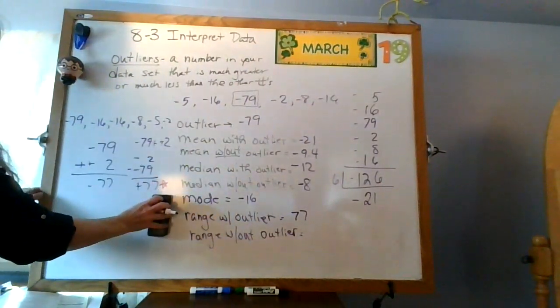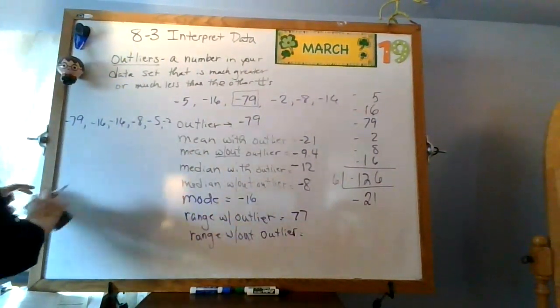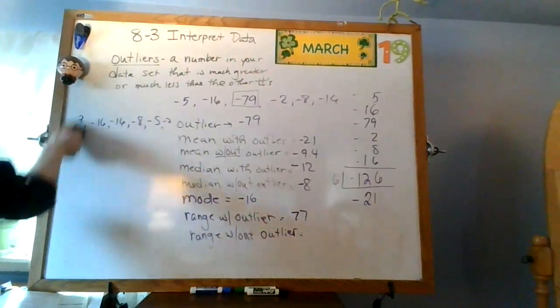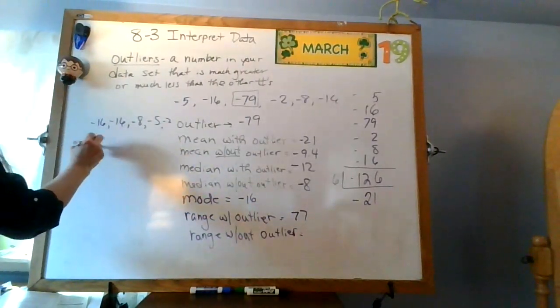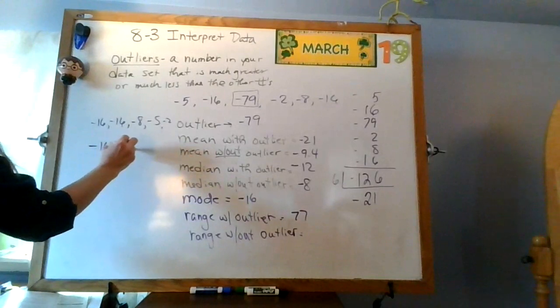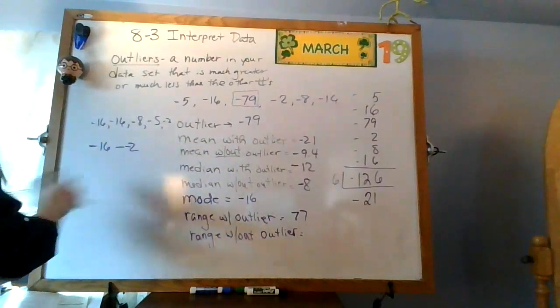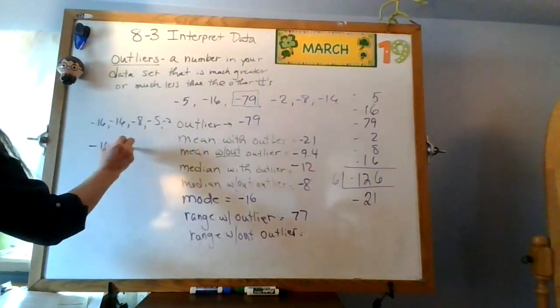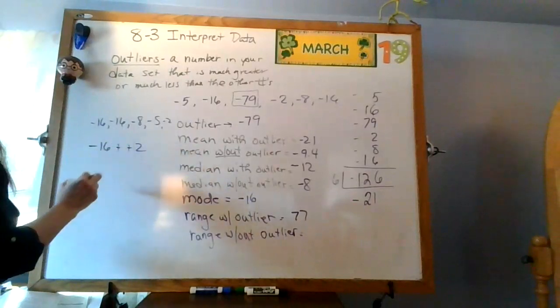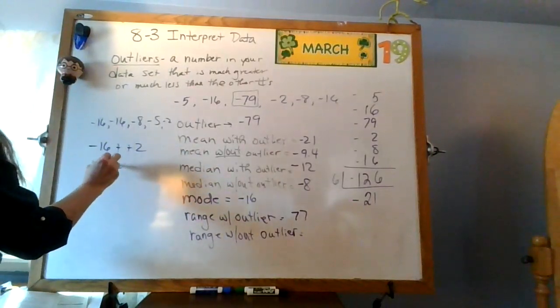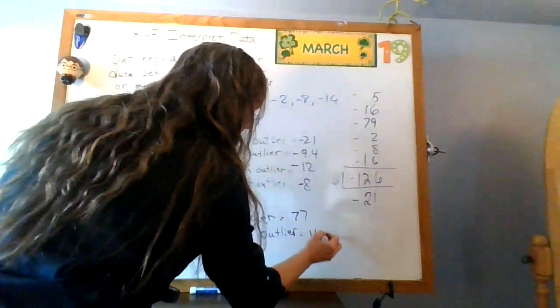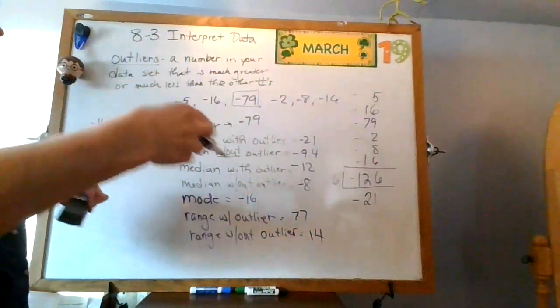And make sure you have this down so that you know. So what's my range without that outlier? Well, negative 16 and negative 2. So I'm going to subtract negative 2, which means I add it. It'll be negative 14. So I'm just going to say positive 14. There are 14 numbers in between.